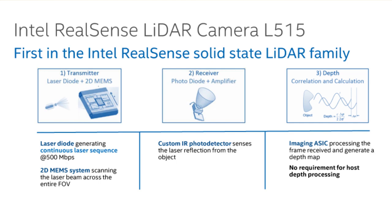The L515 camera has three main functional blocks. The first block is the transmission. That consists of a laser and a MEMS mirror. The laser hits the mirror and the mirror moves around to project that laser beam across the entire field of view.